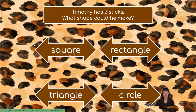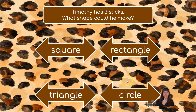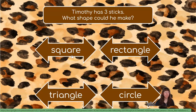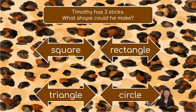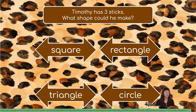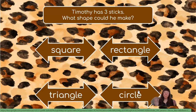Could he make a square, a rectangle, a triangle, or a circle? With three sticks, would we be able to make a square? No, we couldn't make a square. For a square, we would need four sticks, and Timothy only has three. How about a rectangle? Could he make a rectangle with three sticks? No, we couldn't make a rectangle either — a rectangle also has four sides, and with only three sticks, we wouldn't have enough. How about a circle? Could Timothy make a circle with three sticks? No, we couldn't make a circle either. A circle doesn't have any sides.